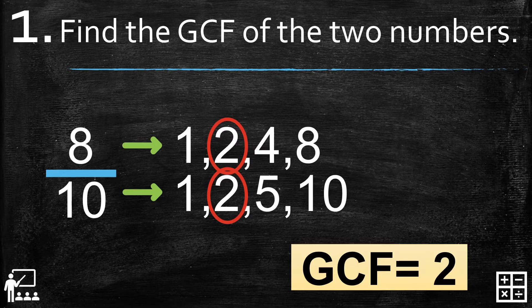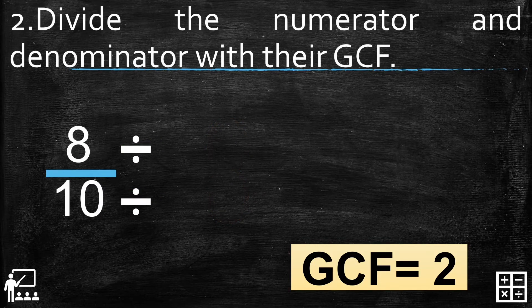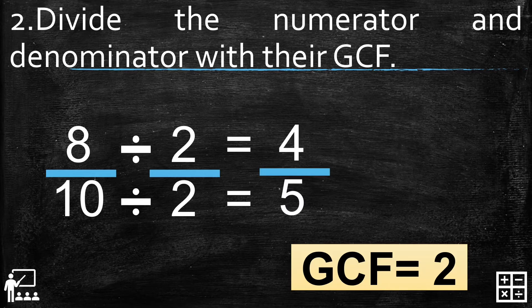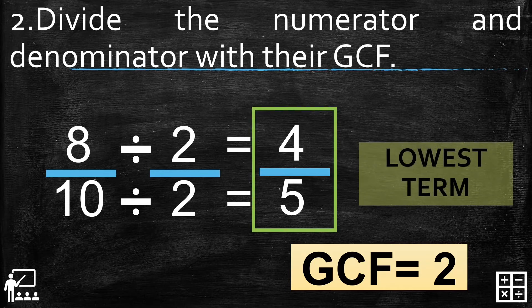Now let's proceed to step 2: divide the numerator and denominator by their GCF. Our GCF is 2, so we divide by 2. 8 divided by 2 equals 4, and 10 divided by 2 equals 5. So the lowest term of 8 over 10 is 4 over 5.